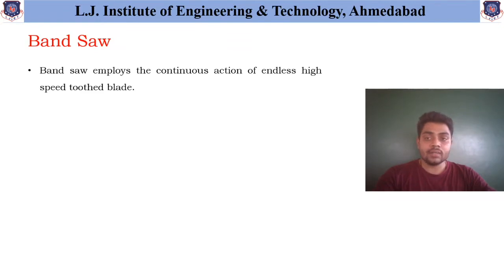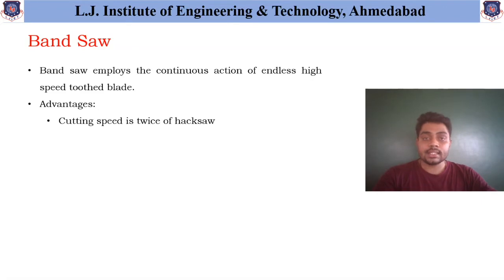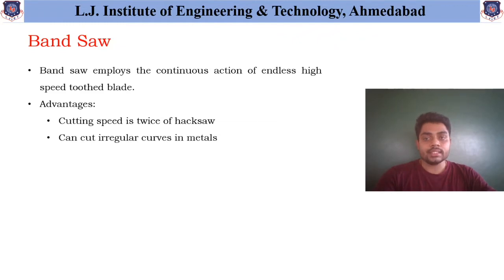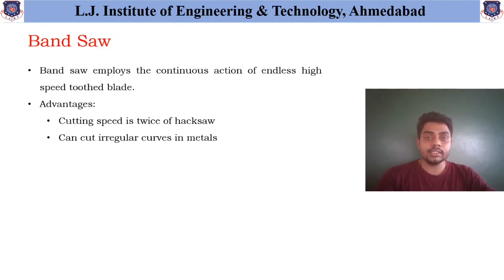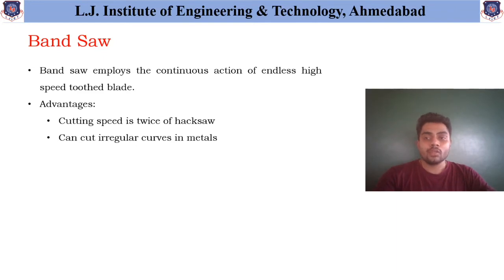The major advantages of using this band saw: the first one is its cutting speed is twice that of the hacksaw blade used. The second one is it can cut irregular curves in metals very easily. In the case of the hacksaw blade, it is necessary that it will cut only straight paths. That means straight cutting is only possible in the case of the hacksaw blade, whereas in the case of the band saw, irregular curves can also be cut very easily.